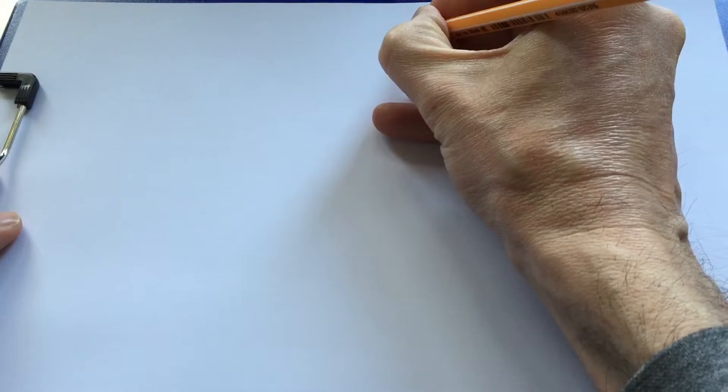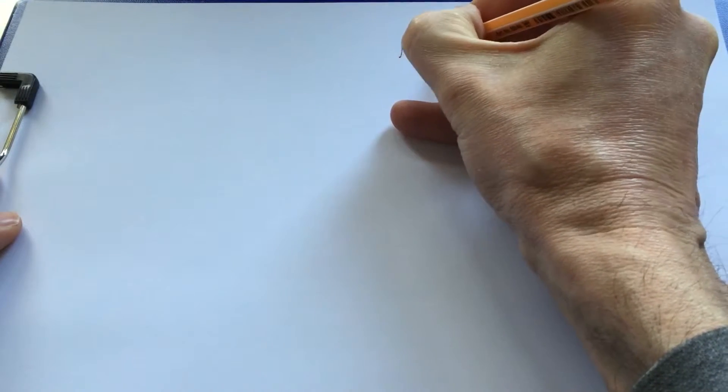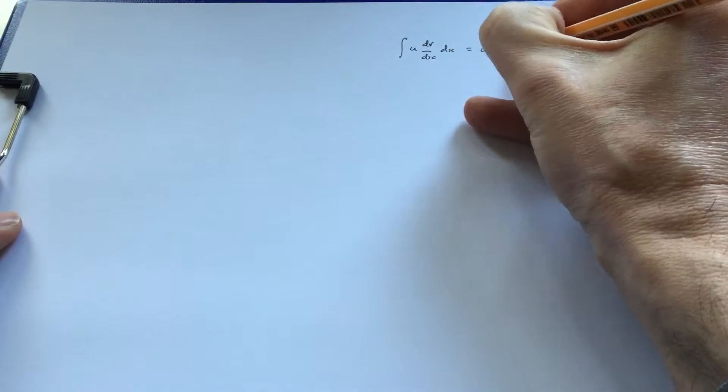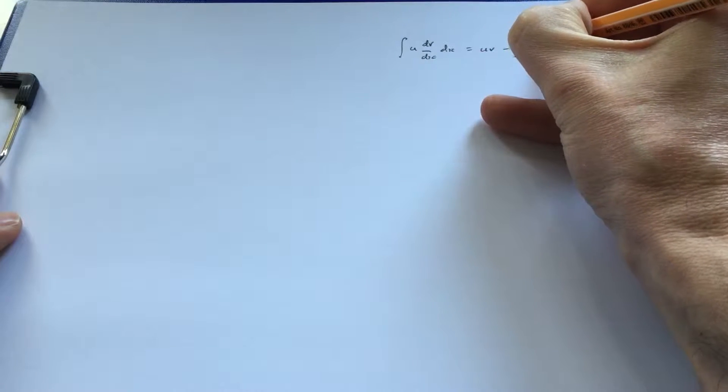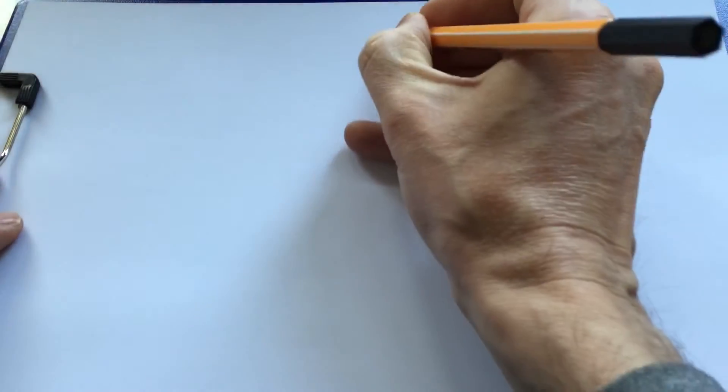This is a short video showing how to use the formula for integration by parts. I'll start by reminding you what the formula is. If you have the integral of u dv/dx, that equals uv minus the integral of v du/dx. So that's the formula.